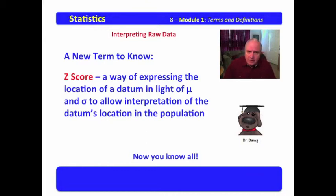A Z-score is a way of expressing the location of a datum in light of mu and sigma to allow interpretation of the datum's location in the population. Now you know all.